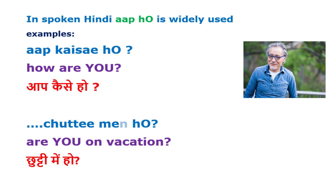So you can say aap kaise ho, and then if you want to ask him 'are you on holidays,' you can say chutti me ho. Because you have already used aap once, you don't have to keep repeating it — that becomes redundant. You say aap kaise ho, then chutti me ho, since aap was already established.